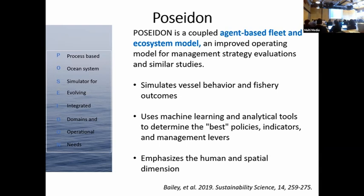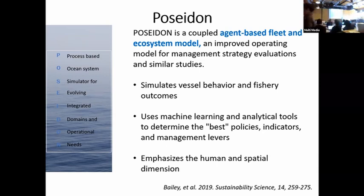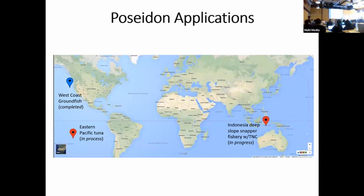The software simulates spatial behavior. Depending on the algorithms you give it, it follows different machine learning algorithms, and you can select different ones depending on the process you think your fishery follows. A lot of the time and effort has gone into modeling actual behaviors as accurately as possible, with a little less emphasis on the biology side. The idea is that eventually you'll be able to couple this to certain biological models like Atlantis or Ecopath. Currently, we have three implementations of the Poseidon model.